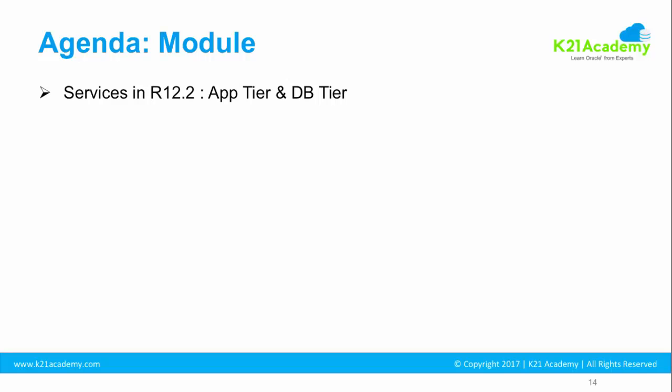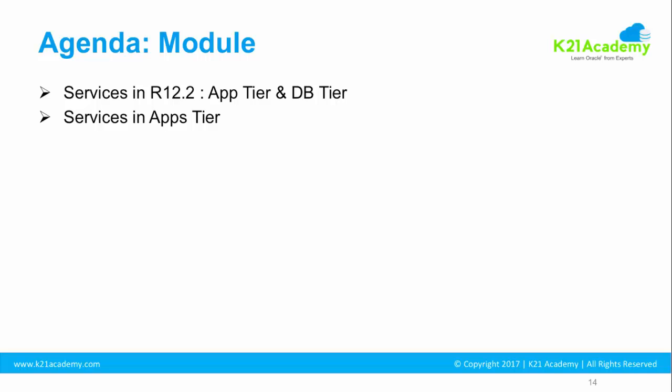We'll start with services in R12.2. As covered in module one and module three, Oracle eBusiness Suite has two tiers: apps tier and database tier. We're going to look at what services are in the apps tier, what are in the database tier, and how to start and stop services in each tier. Then we'll deep dive into application tier services and how these services are mapped into the context file — we'll do a high-level overview here and go into detail about the context file in a subsequent module on auto config.